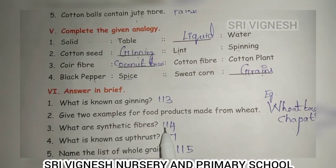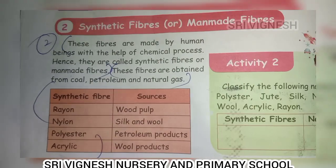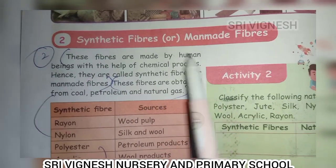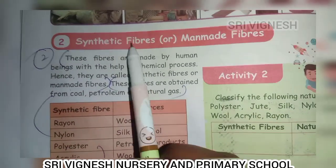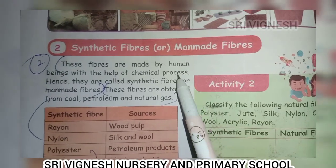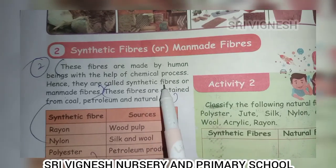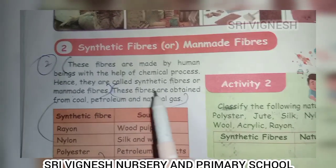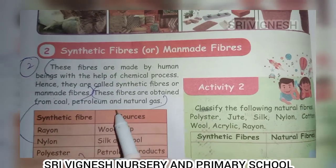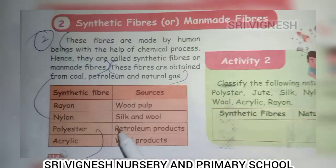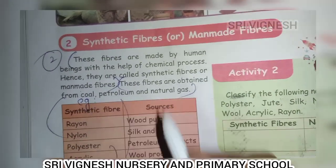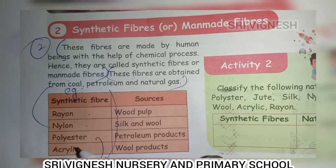What are synthetic fibers? These fibers are made by human beings with the help of a chemical process. These fibers are obtained from coal, petroleum and natural gas. Examples: rayon, nylon, polyester, acrylic.